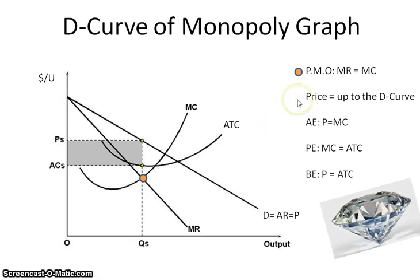One of the tricks here is to recognize price. In order to figure out the price, it's not perfectly elastic where you're just going to draw a line over to the dollars per unit axis. Rather, you have to go where MR equals MC, take it up to the demand curve, and that gives you the price for the monopoly.